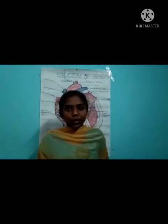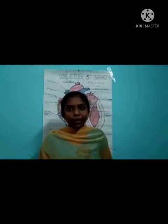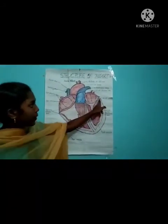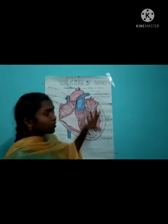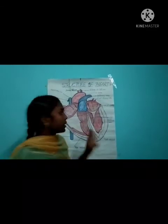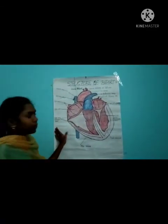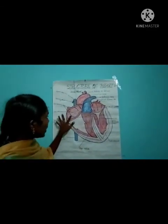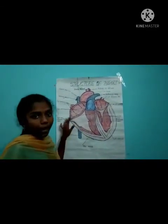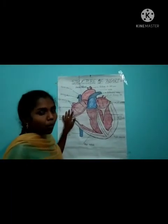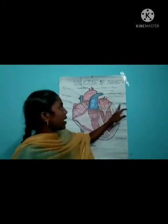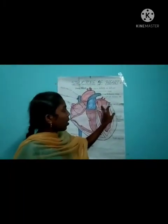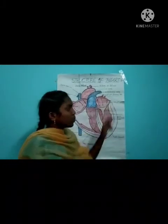Types of blood reservoirs — there are two types. The first one is the right atrium and the second one is the left atrium. These are blood reservoirs. The right atrium receives deoxygenated blood from the body, and the left atrium receives oxygenated blood from the lungs.